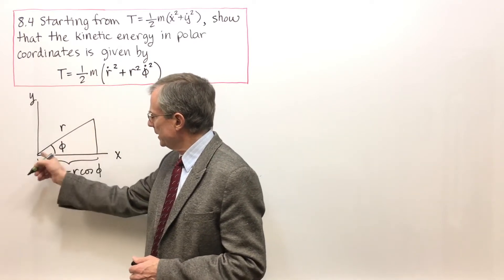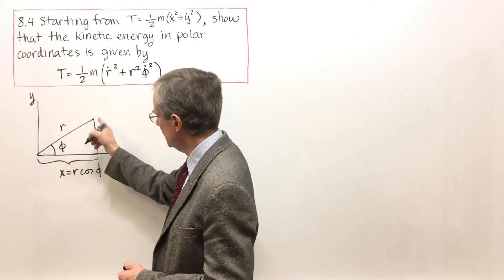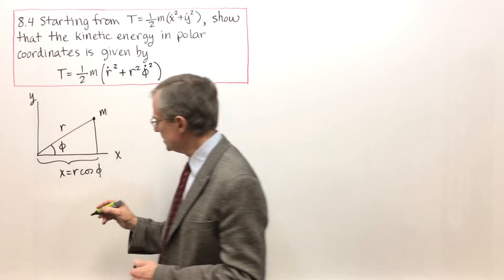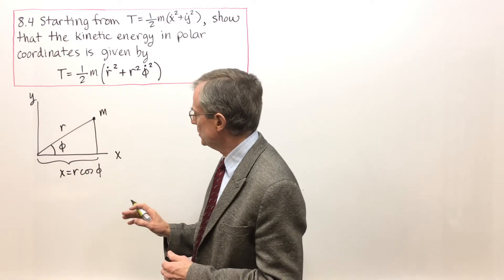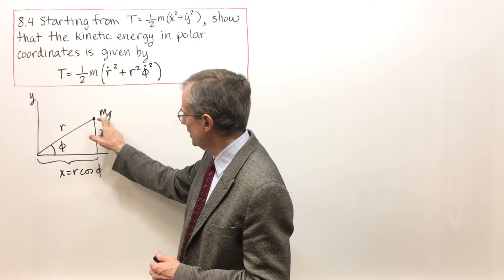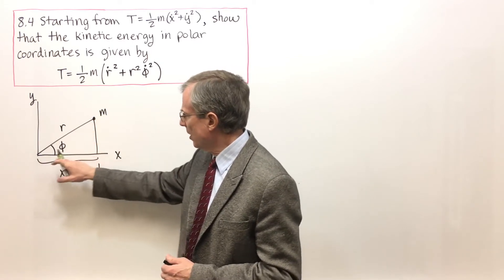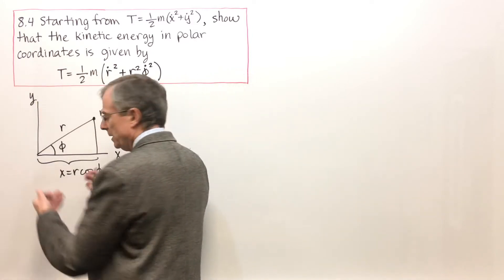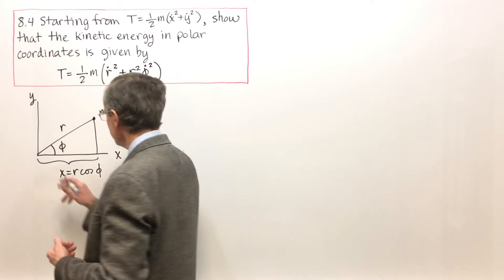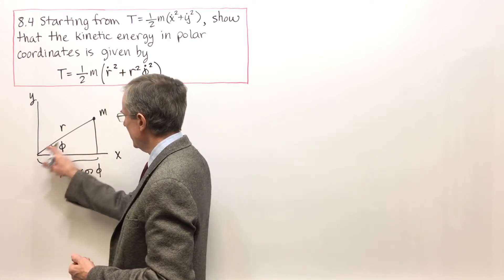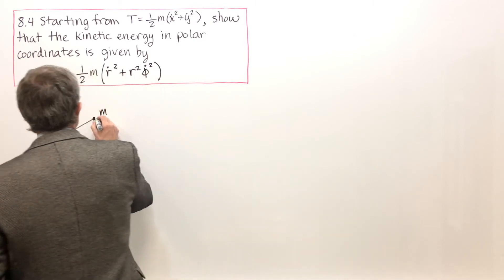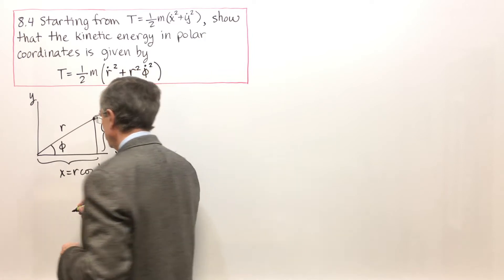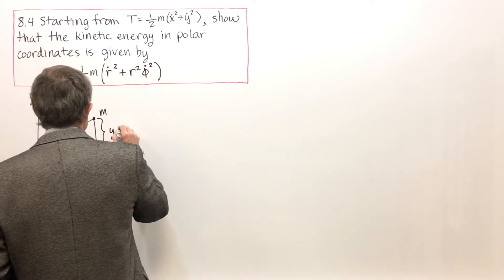So an azimuthal angle phi, distance r, and we're going to be considering—the reason for doing this is that we're interested in the kinetic energy of a mass m at a distance r and angle phi. Certainly by straightforward trigonometry, this side of the triangle is r cosine phi, because that side is r, the hypotenuse is r, and this vertical side of the triangle gives us y.